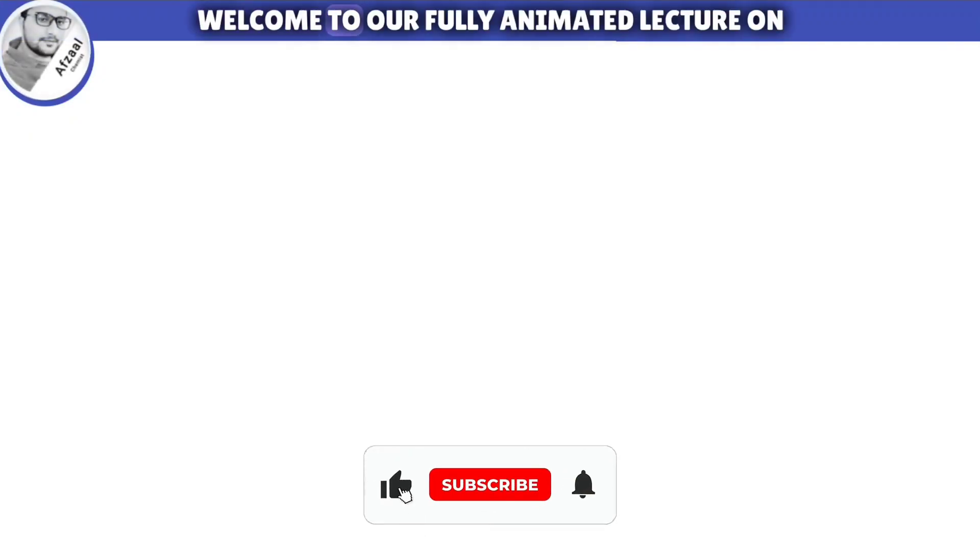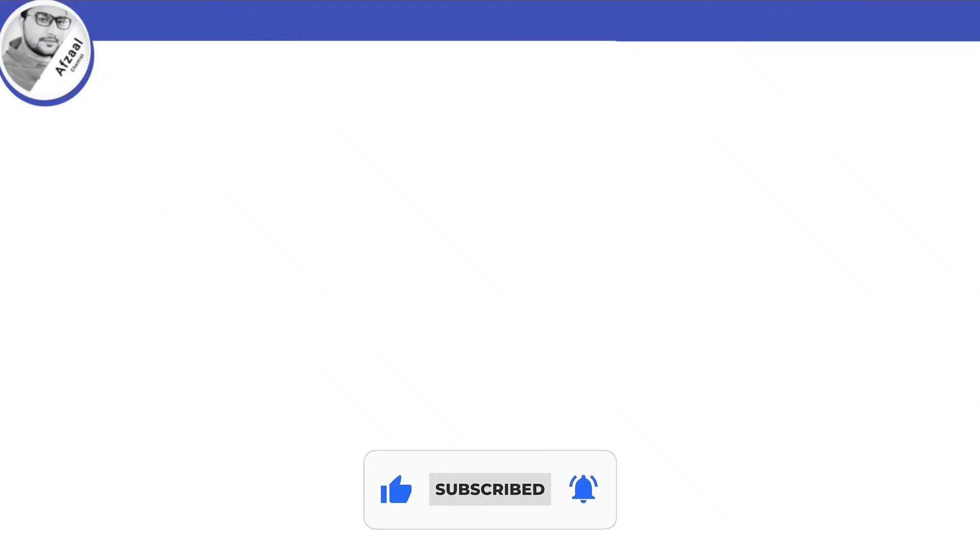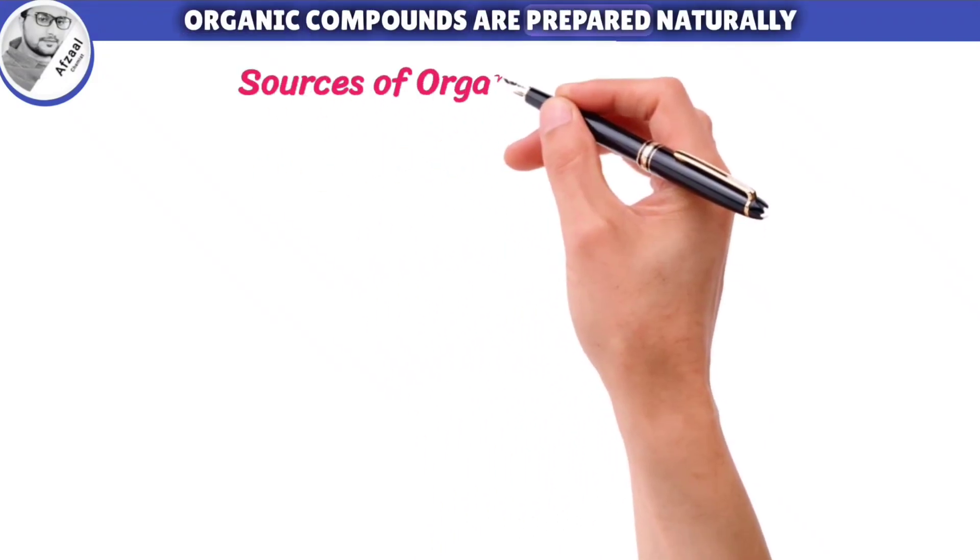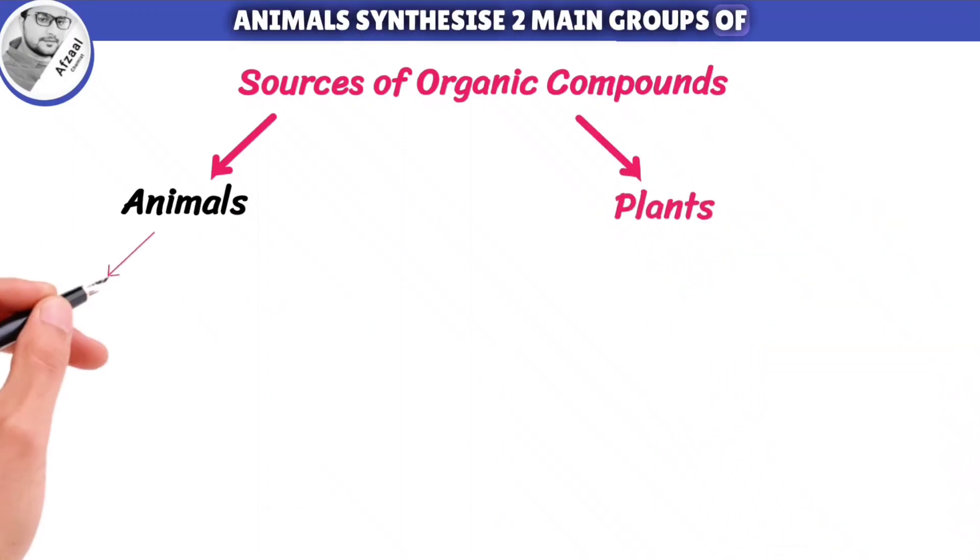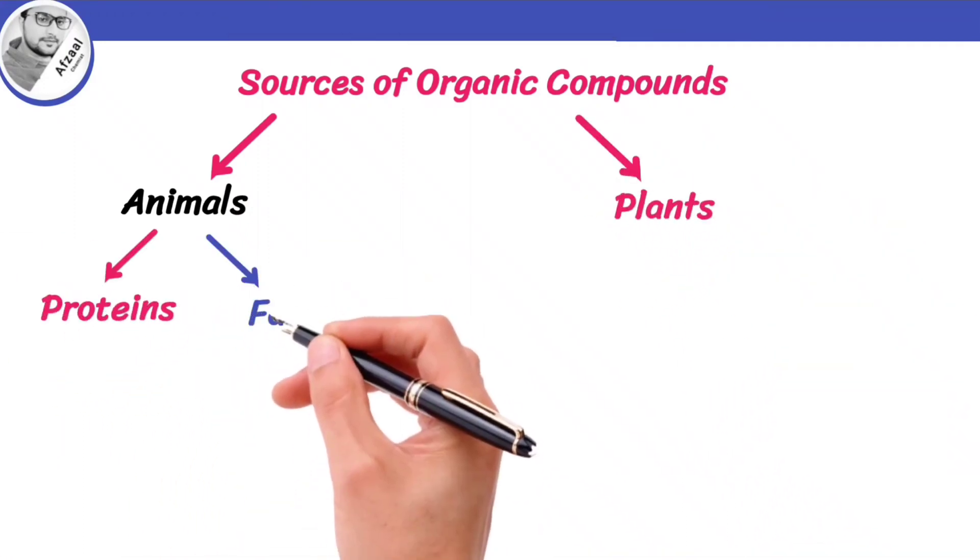Hello, everyone. Welcome to our fully animated lecture on the sources of organic compounds. Organic compounds are prepared naturally by animals and plants. Animals synthesize two main groups of organic compounds, proteins and fats.